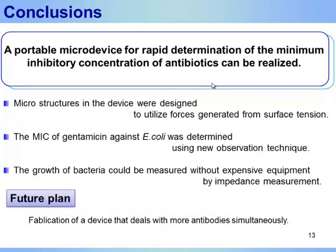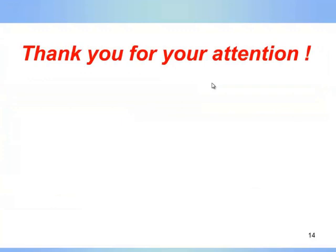In conclusion, a portable microdevice for rapid determination of the minimum inhibitory concentration of antibiotics can be realized. The minimum inhibitory concentration of gentamicin against E. coli cells was determined using a new observation technique without fluorescence labeling and fixation. Furthermore, the growth of bacteria could be measured without an expensive instrument by impedance measurement. For the next future plan, we will fabricate a device that will deal with more antibiotics simultaneously. Thank you for your attention.